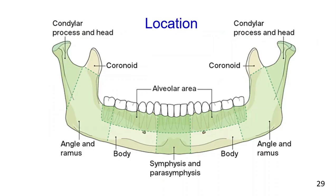Next is the fracture location. Most clinicians generally subdivide the mandible into different anatomic locations: symphysis and parasymphysis, body, angle and ramus, condylar process and head, coronoid process and alveolar area.